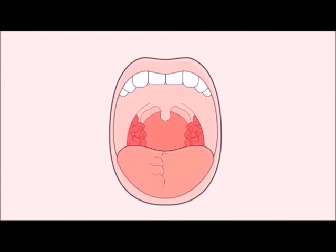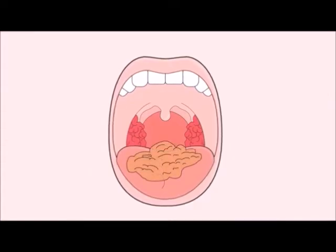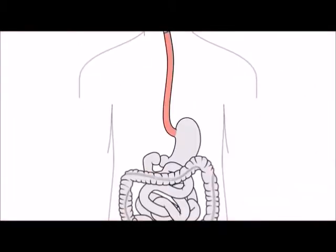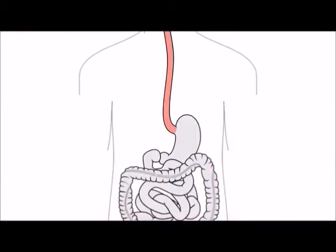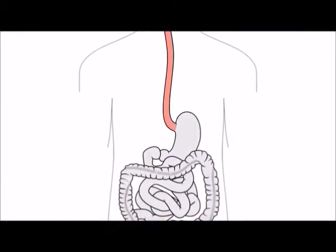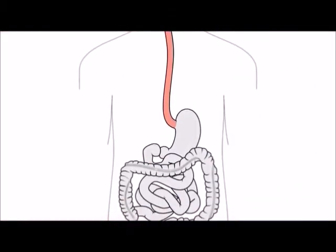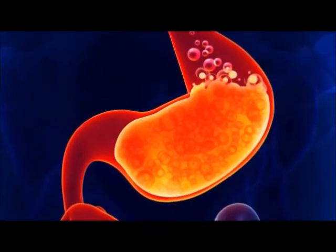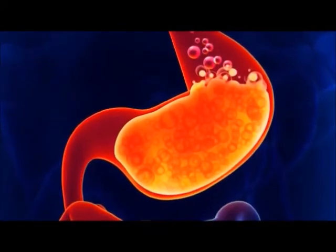The digestive system begins with the mouth, where teeth mash food, the tongue moves it around, and saliva lubricates it and begins digestion. Upon swallowing, food travels down the esophagus and into the stomach, where acid kills bacteria and breaks down food further.